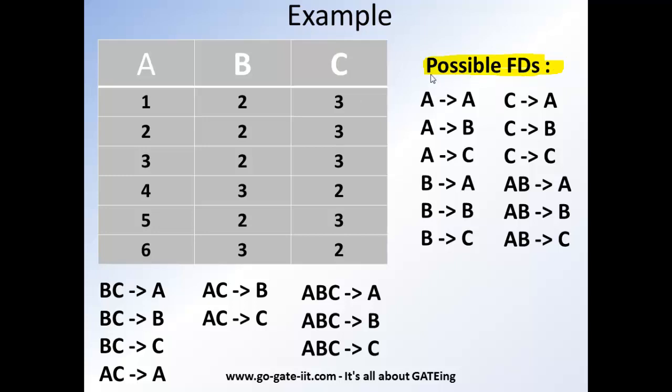On the right hand side you can see the possible FDs of this given relation. FDs here means functional dependencies. So here around 21 set of functional dependencies, possible functional dependencies we have derived from the given relation. So how does we read this? A derives A or A determined by A. B is derived by A. What does this mean now? Now here you can see that this A is nothing but the determinant part and this B is nothing but the dependent part.